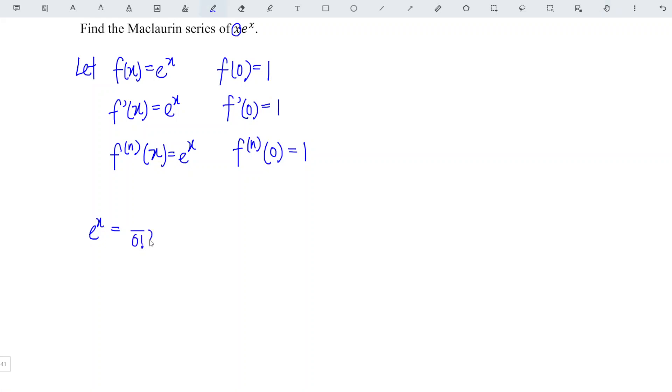So over 0 factorial x^0, first derivative is 1 over 1 factorial x^1, second derivative is 1 over 2 factorial x^2, third derivative is 1 over 3 factorial x^3, fourth derivative is 1 over 4 factorial x^4 and so on, depending on how many terms the question requested.